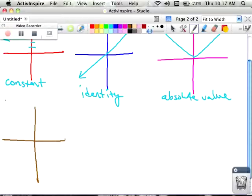There's also y equals the square root of x. Looks like this. This is the square root function. Looks like half a parabola on its side.